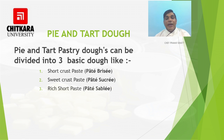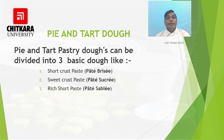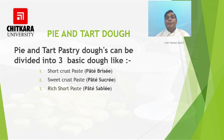Let us discuss pie and tart dough. Pies are composed of sweet or savory filling in a baked crust, and are generally made in round slope-sided pans. Tarts are similar except they are made in shallow straight-sided pans. They can be almost any shape and often have glazed fruits, piped creams, or chocolate decorations.